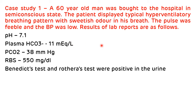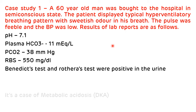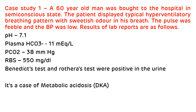This is a case of metabolic acidosis. Additional clues: RBS is 550 mg/dL indicating hyperglycemia; Benedict's test and Rothera's test in urine are positive, meaning there is excretion of sugar and ketone bodies. The patient also shows Kussmaul's respiration and a sweetish acetone odor. Therefore, this is specifically diabetic ketoacidosis — an example of metabolic acidosis compensated by hyperventilation.